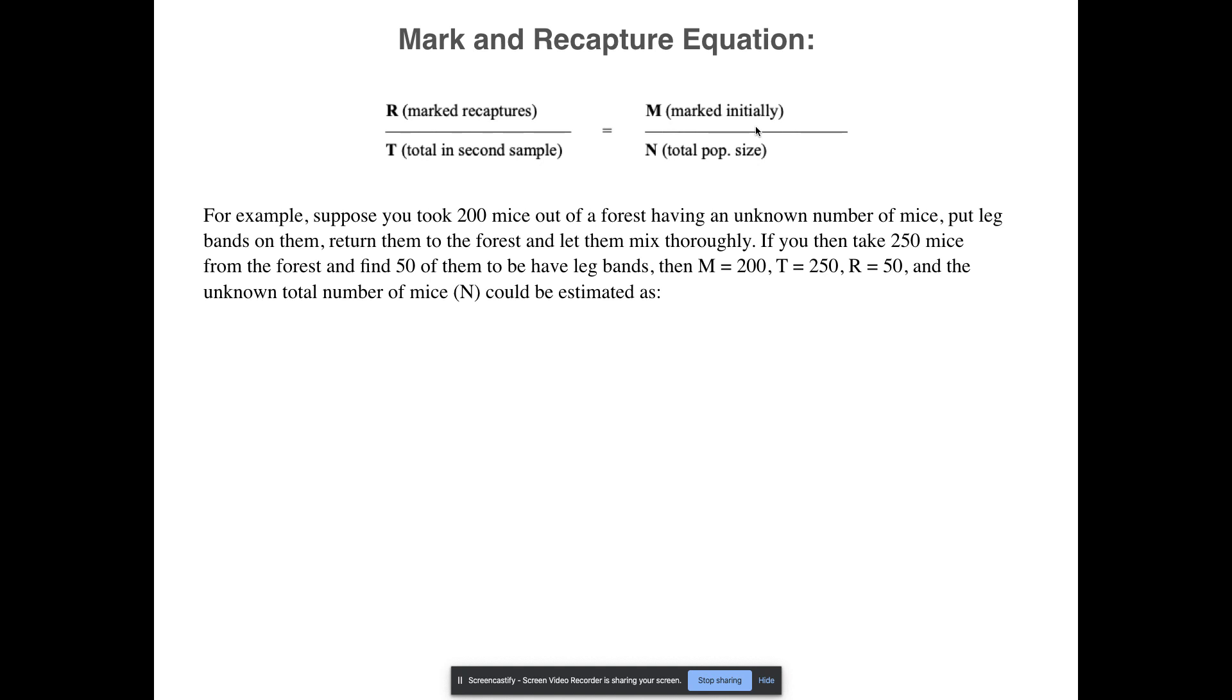Now let's say you come back a week later so that it's enough time for them to mix around. Now you recapture 250 mice from the forest and 50 of them have the leg bands. So if you're looking at 250 mice that you recaptured, that would be the total in the second sample. Only 50 of them had the leg band though. So M was 200, the number we marked initially. 250 is the number of mice we took in our second sample, and R would be 50, the number that had those little bands on them.